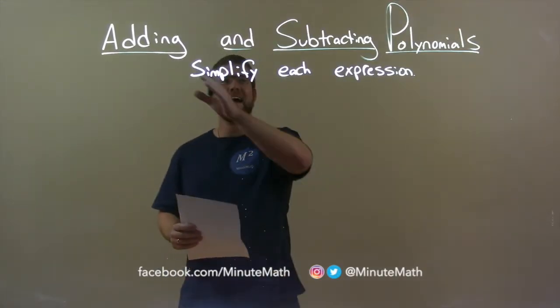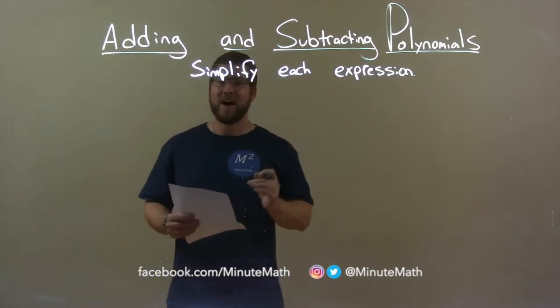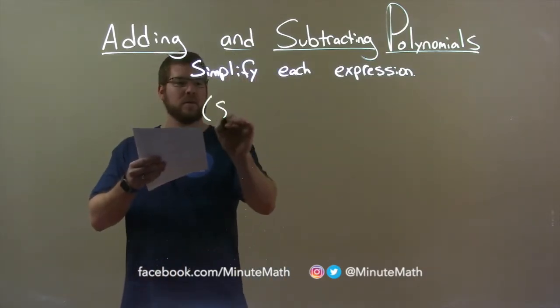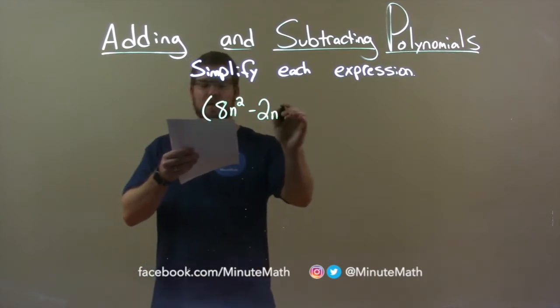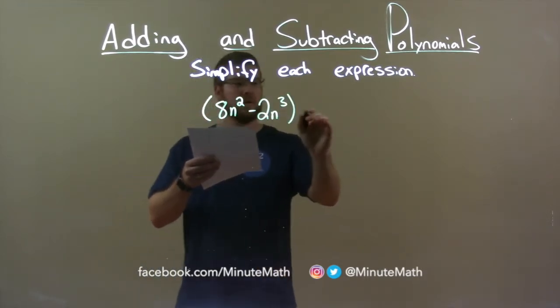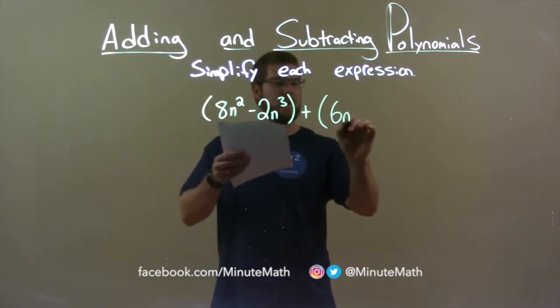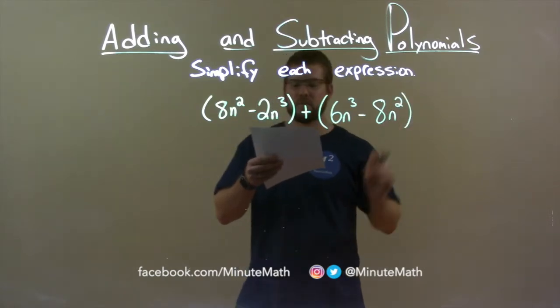Today we're learning about adding and subtracting polynomials. We're going to simplify each expression. So, if I was given this expression: 8n squared minus 2n to the third plus 6n to the third minus 8n squared.